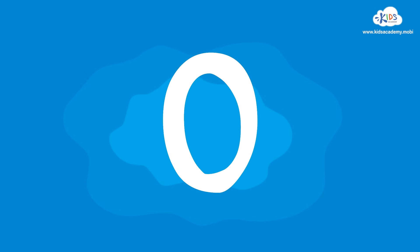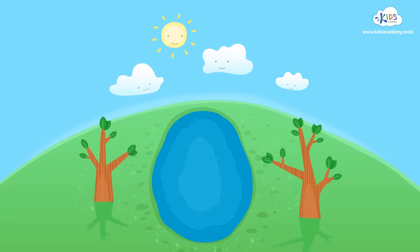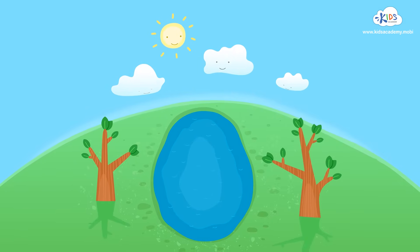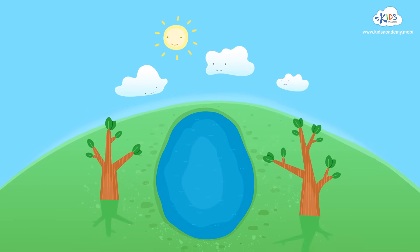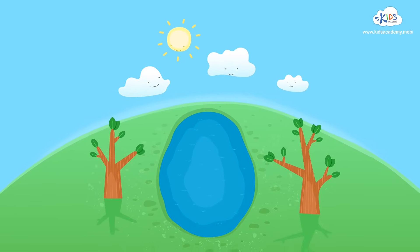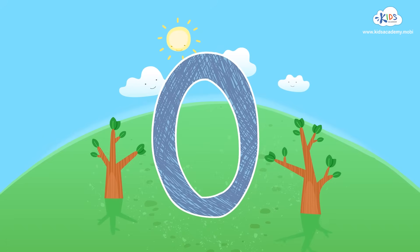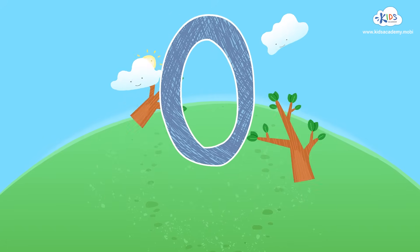We use all other numbers when we can see some snowflakes, raindrops, birds, or other objects. We use zero when there are no objects at all.